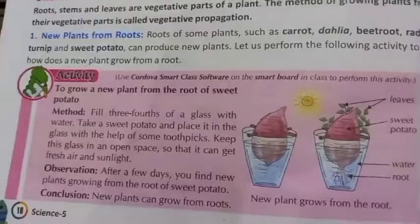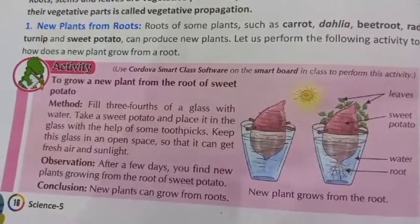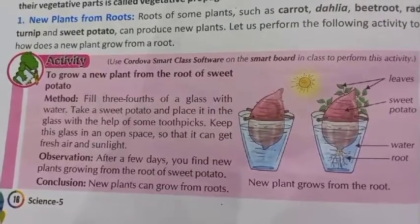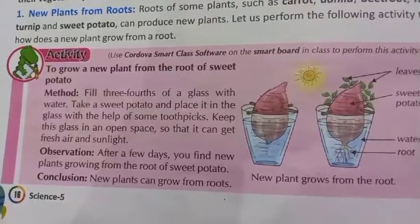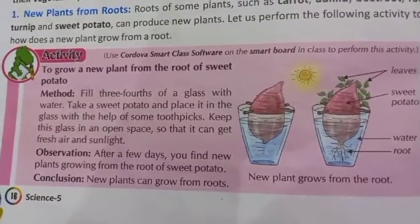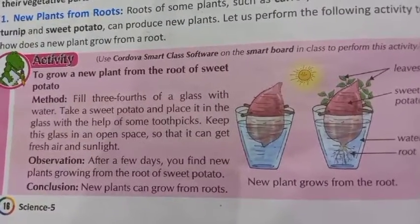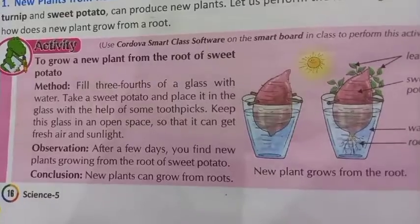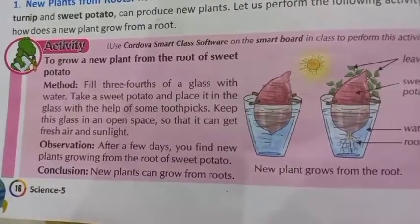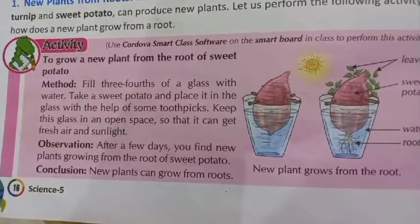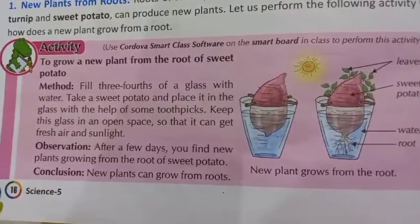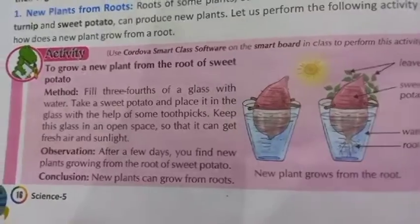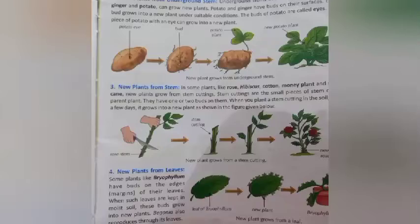Observation: after a few days, carrot, beetroot, and other roots contain small buds from which new plants grow. A piece of a root along with a bud is cut and planted in the soil. Under suitable conditions, these buds develop roots and shoots, forming a whole new plant. These buds are small lumps on the plant part — so students, in the next video we will continue with new plants from underground stem. Till then, goodbye.